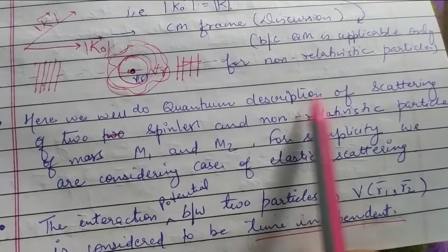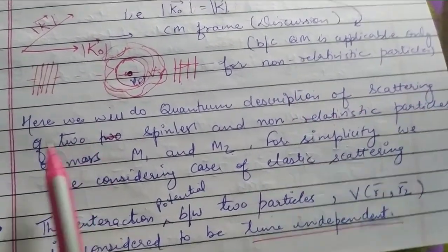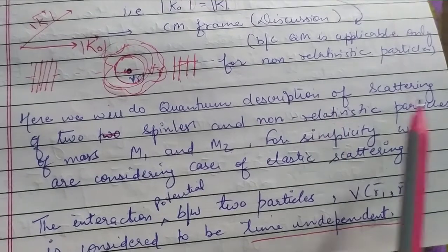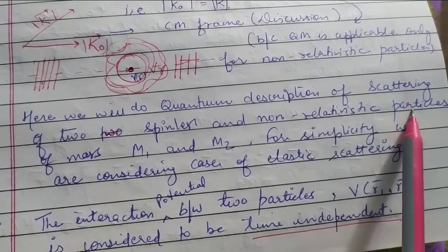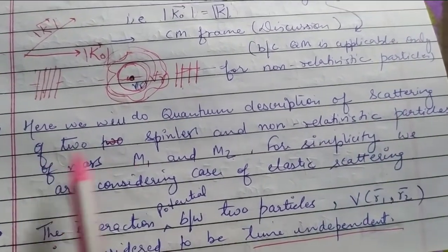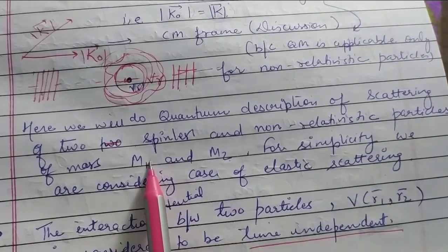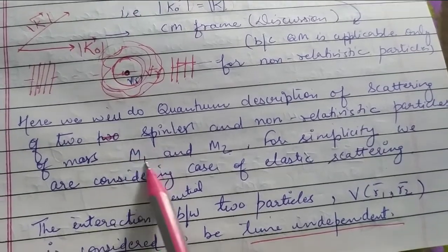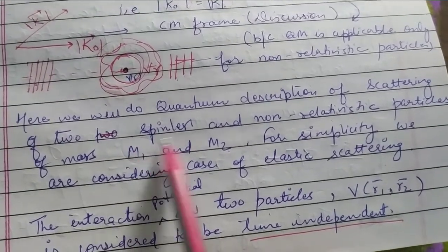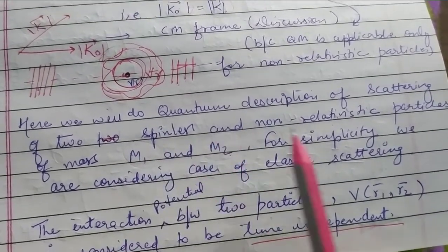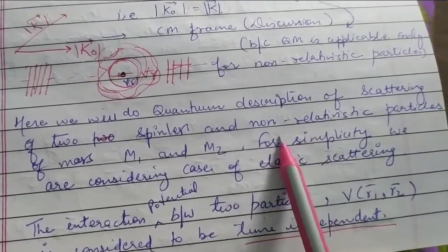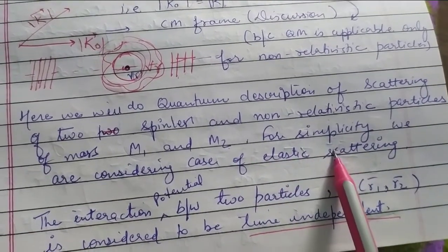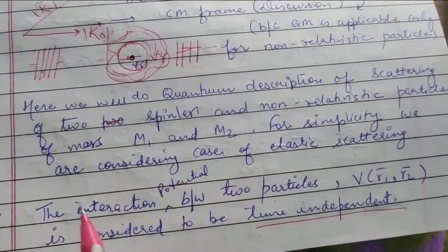We will do the quantum description of scattering of two spinless and non-relativistic particles. The particles have masses M1 and M2 — we are talking about two particles, so we have a two-body system here. For simplicity, we are considering the case of elastic scattering.